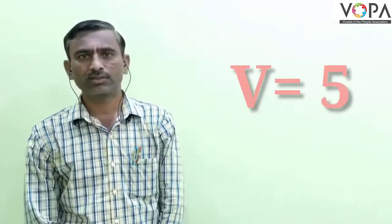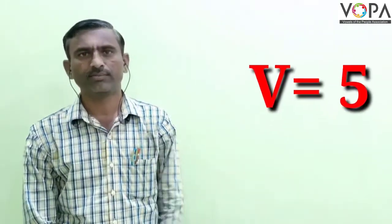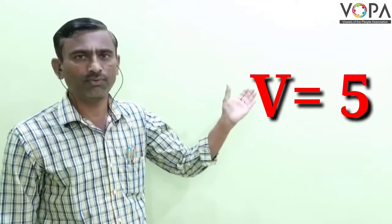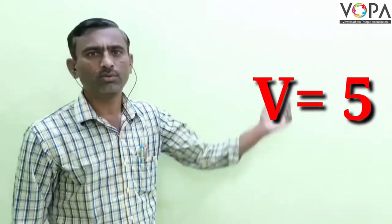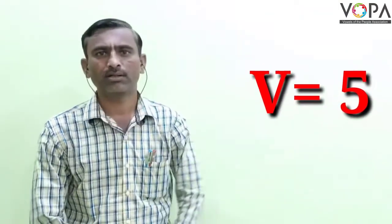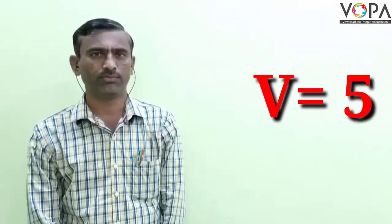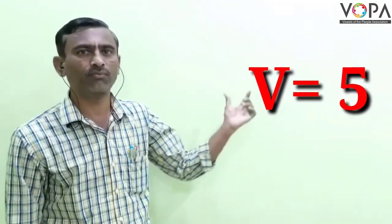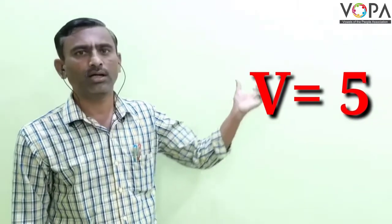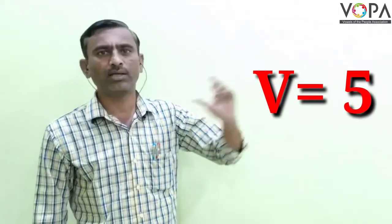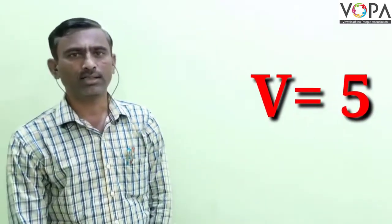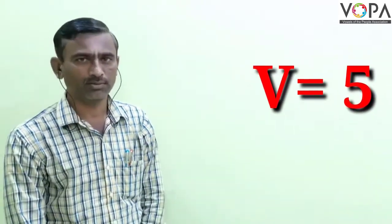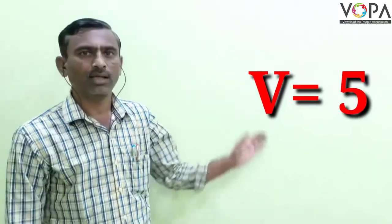The next symbol is V. Symbol V is used to write the number 5. Symbol V, haa 5, haa number, lhane sati va parladuk.